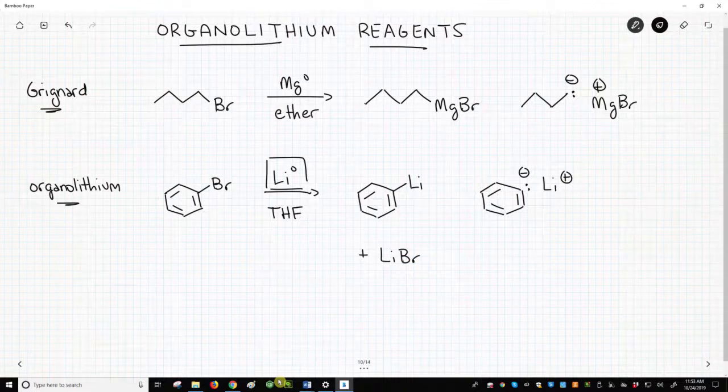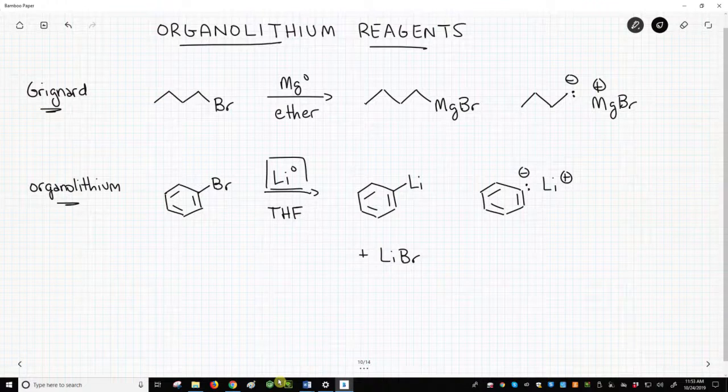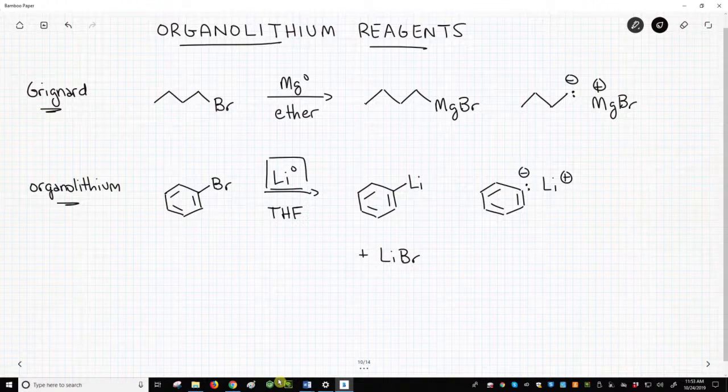The metal reduction requires two electrons. For magnesium on the top in the Grignard reagent, the metal has two electrons in its valence shell. One magnesium can make one Grignard reagent.